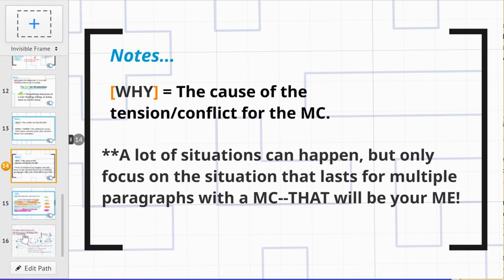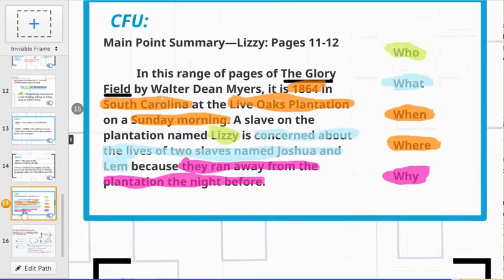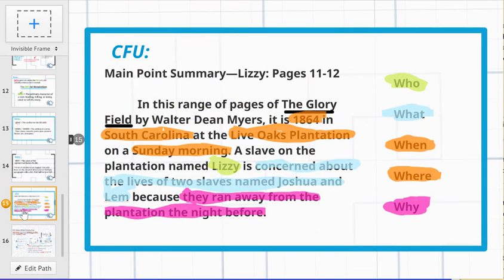That's pretty much that. The way that you're going to set this up, it's going to look like this: you have your main point summary, your dash, you'll put your character's name, colon, the pages that you read, and then you pretty much write it up. You're going to look at the stems there. In this range of pages, give the setting first, and then go into your main character.